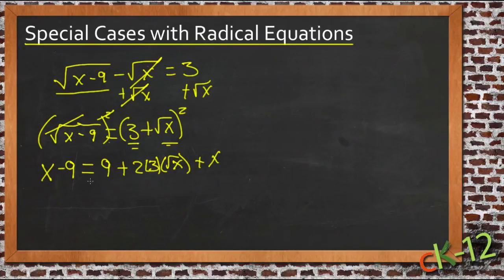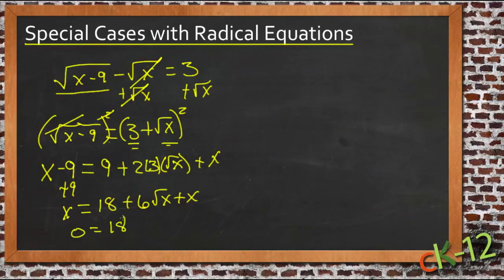And then we'll just combine like terms. We have x minus 9, I'll go ahead and move the 9 over, add 9 to both sides, so we'll have x equals 18 plus 2 times 3 is 6 square roots of x, plus x. Then we'll subtract x from both sides, and we'll get 0 equals 18 plus 6 roots of x.